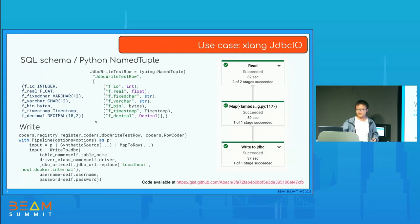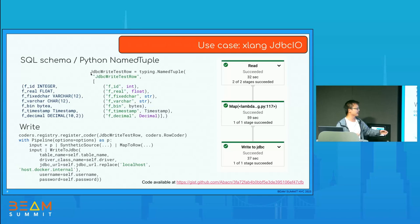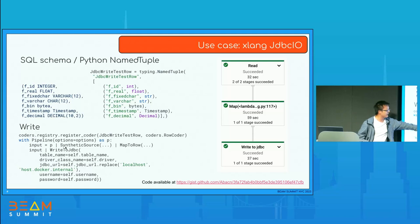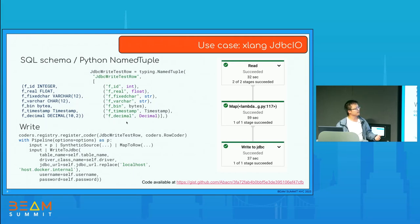At this point, cross-language JDBC IO handles most common SQL types. The implementation of the PTransform in cross-language is very straightforward. For example, in a write-to-JDBC scenario, we have a SQL schema with varchar, fixed char, timestamp, and fixed-precision decimal columns. We use a named tuple as the input type for the PCollection. The actual working code is very short — just a Python PTransform with some configuration — run on Dataflow. Writing 1 million rows takes about a minute.